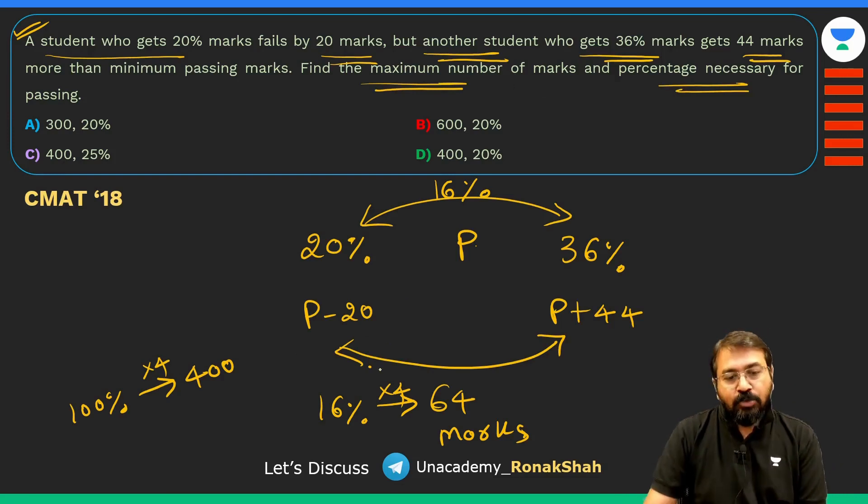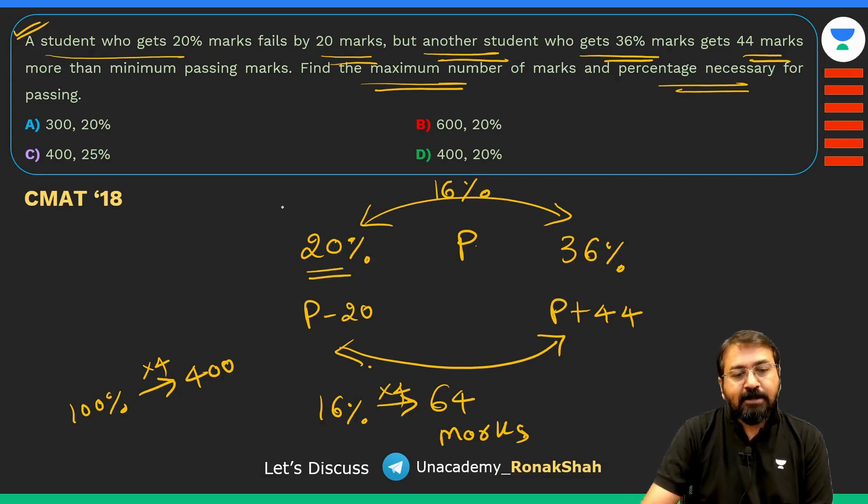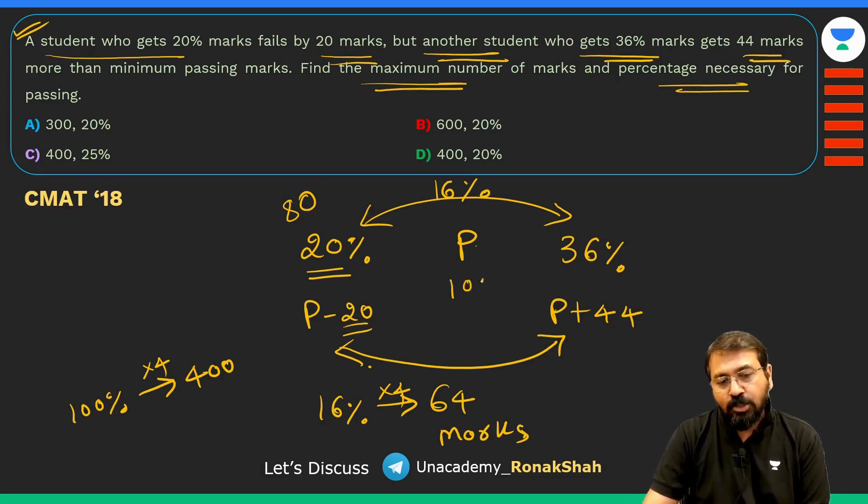But what they are asking is find the maximum marks and the percentage necessary for passing. What will be the passing marks? We can find out 20% first of all, so 20% will come out to be 80, and our marks are 20 less than the passing marks, so passing marks should be 100. 100 out of 400 it's 25%, so we can tick mark option C. Our passing marks are 100 which is 25% of the total marks.